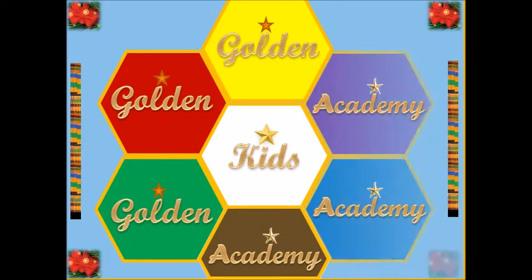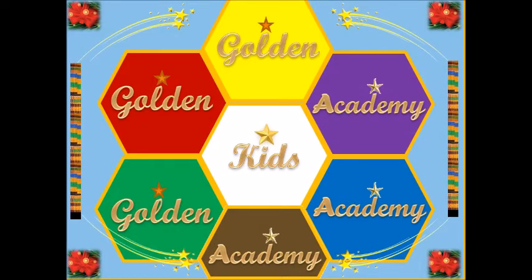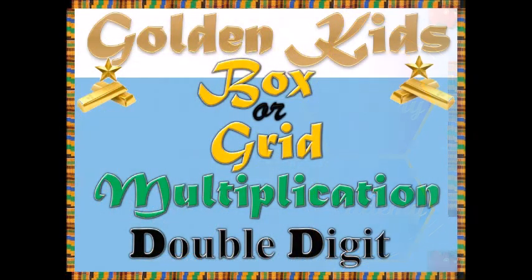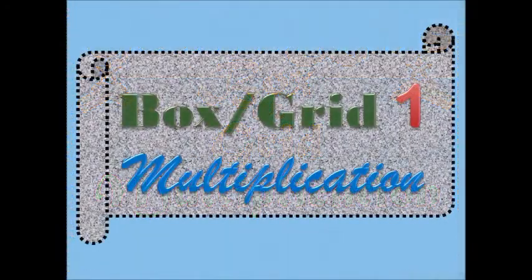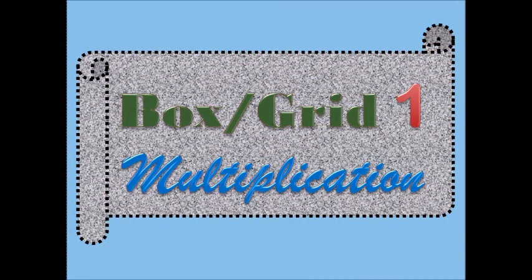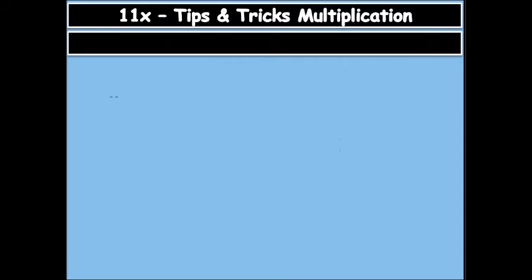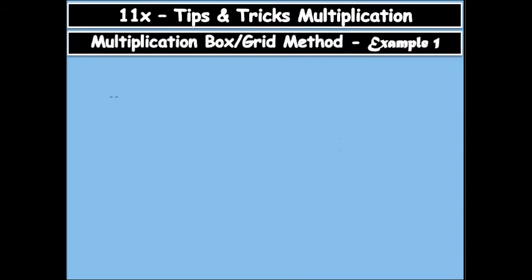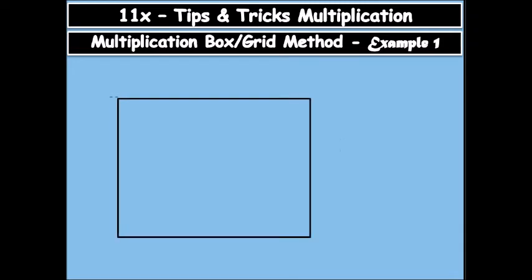So we have Golden Case Academy, the best of all. Now we have Golden Case box or grid multiplication. First you will draw your columns and rows. Since we are dealing with two digits, we will draw two columns and two rows.